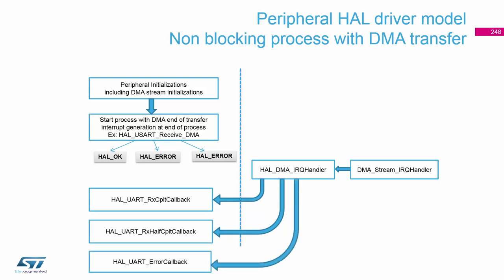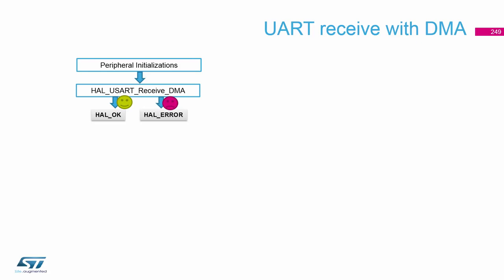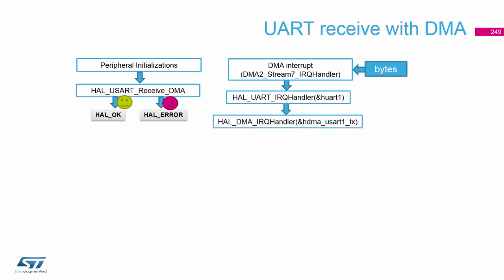We can also use the half-transfer complete callback, meaning we are at the halfway point of our buffer. In our case when receiving or transmitting 10 bytes, the half transfer fires at 5 bytes. Similar to the interrupt approach, the DMA function is non-blocking — when we call receive and everything is okay, we get an OK return, and when we receive the bytes we go into the interrupt.